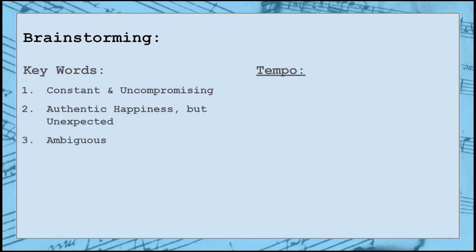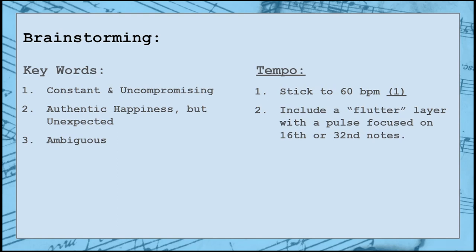For tempo, I came up with two different strategies. The first is to stick to a tempo around 60 beats per minute, which is the equivalent of one beat per second. This can help underline the constant nature of the invitation by relating it to time. The second is to include a layer in the music dedicated to much quicker subdivisions of the beat — something around 16th or 32nd notes. This layer will add a bit of subtle energy to the music that could be portrayed as either building excitement towards something better or building tension towards something worse.